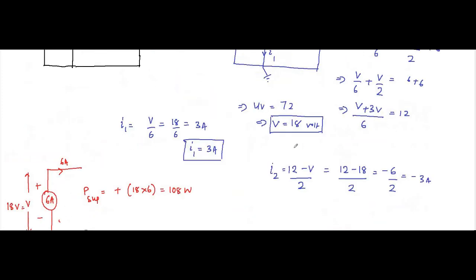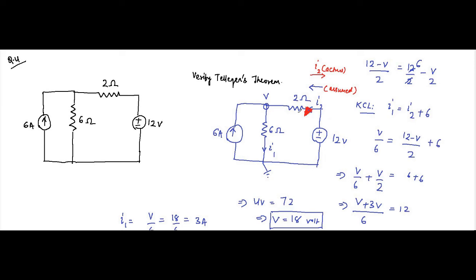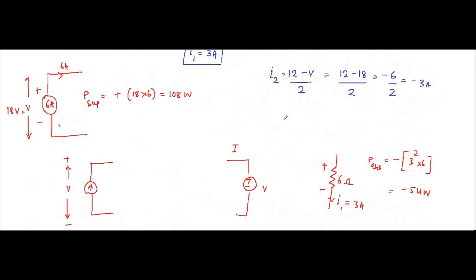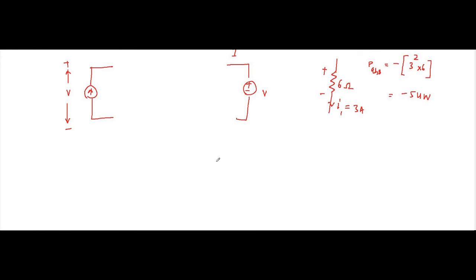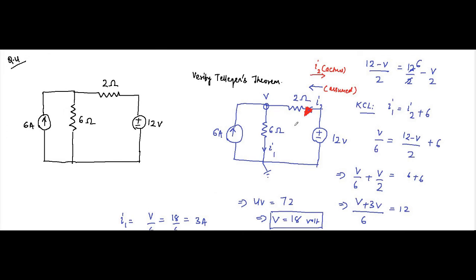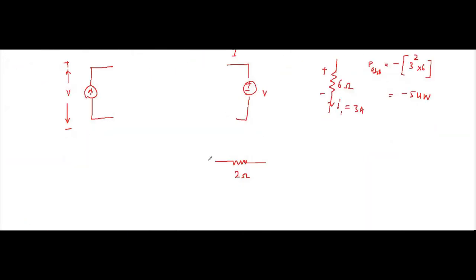For the 2 ohm resistor, the current flows from left to right at 3 ampere with polarity plus-minus. This resistor is also absorbing power: P = I² × R = 3² × 2 = minus 18 watts.